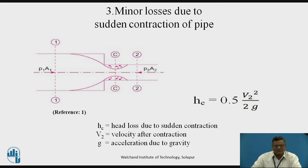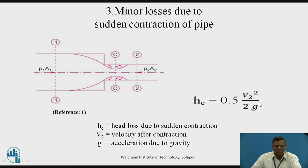The third type is minor loss due to sudden contraction of pipe — exactly opposite to the previous case. Here the cross-sectional area has suddenly decreased at a particular section. Due to the sharp edge, losses occur, and at section CC, the vena contracta is formed where the cross-sectional area of the flow jet is smallest. The flow then expands to fill the full pipe cross-section at section 2-2. The head loss due to sudden contraction equals 0.5 × V2² / 2g, dependent on the velocity at section 2 only.